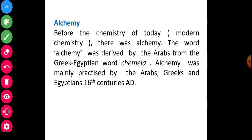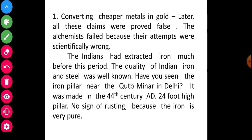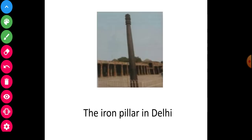Converting cheaper metals into gold. All these claims were proved false. The alchemists failed because their attempt was scientifically wrong. The Indians had extracted iron much before this period. You will see the iron pillar in Delhi. There is no rusting because the iron is very pure. This pillar is situated near the Qutub Minar in Delhi.